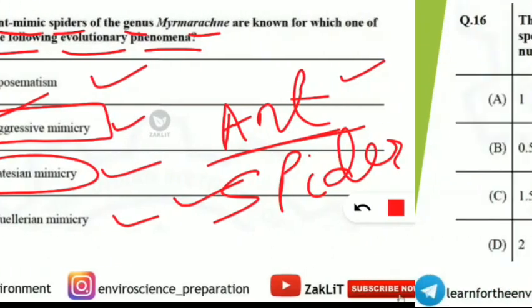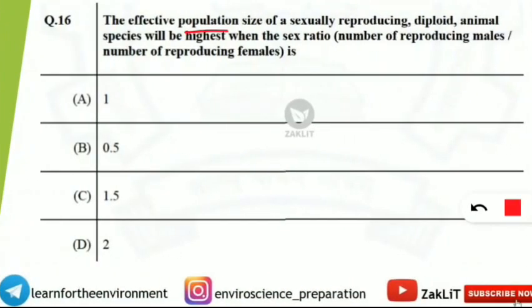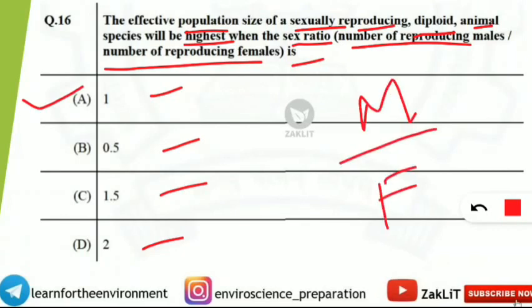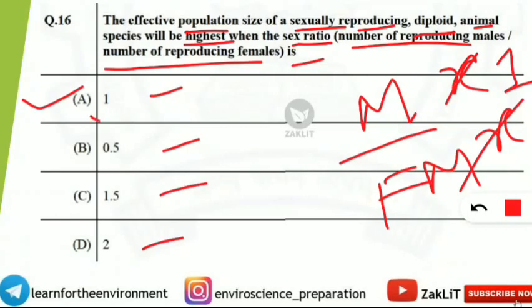The next question asks: the effective population size of a sexually reproducing diploid animal species will be highest when the sex ratio (number of reproducing males per number of reproducing females) equals what value — 1, 0.5, 1.5, or 2? The correct answer is 1, meaning equal numbers of males and females. When males equal females, the sex ratio is 1:1, which maximizes the effective population size.